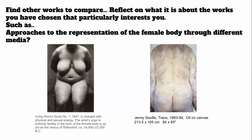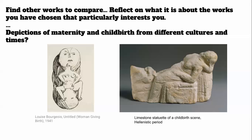Find other works to compare to your starting artwork by reflecting on what interests you. For instance, if you're interested in the representation of the female body, you could compare the Venus of Willendorf to a painting by Jenny Saville or a photograph by Irving Penn — who directly referenced it — or explore thematic ties around maternity and childbirth through artists like Louise Bourgeois, whose print dates to 1941, or a Hellenistic limestone statuette.